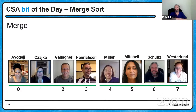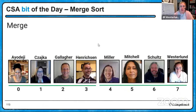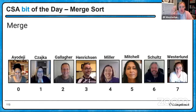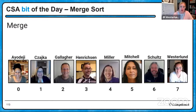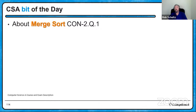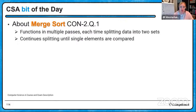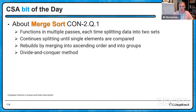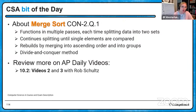Merge sort summary: it's recursive, divide and conquer, with multiple passes — it splits, it merges. Mr. Schultz has made two videos on AP Daily in Unit 10 covering this. Be inspired to make your own list of eight ducks, dogs, or whatever, and work through these algorithms so you understand conceptually what's happening, then study the Java code. This particular algorithm will only appear in multiple choice — you certainly won't have to write merge sort code in a free response. Recursion will be covered in more detail tomorrow.